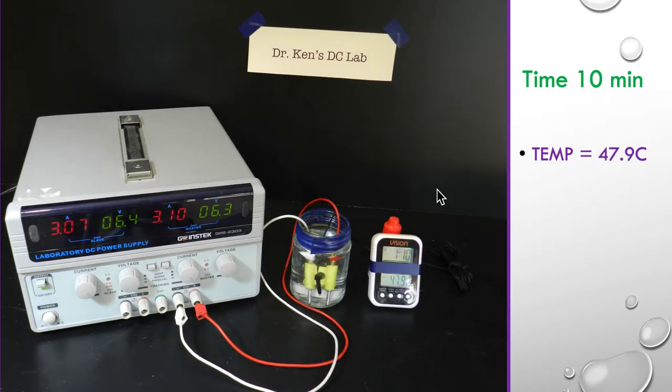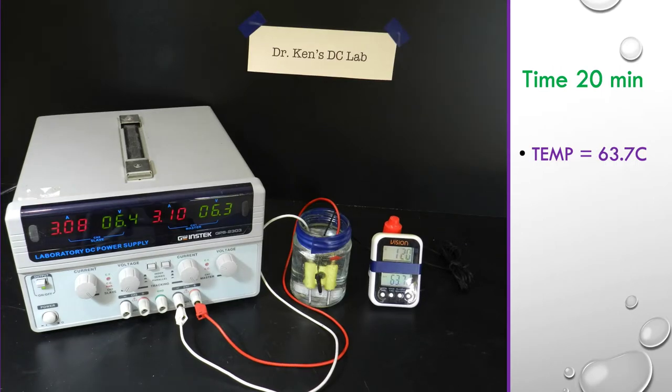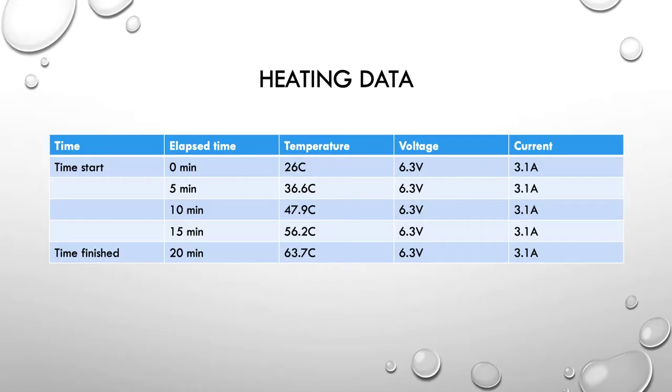We move forward. We've gone up to our 10 minutes now, and we're at 47.9 degrees. 15 minutes, 56.2, and then our final reading at 20 minutes, 63.7 degrees at our 20-minute point, and our voltage and our current hasn't changed.